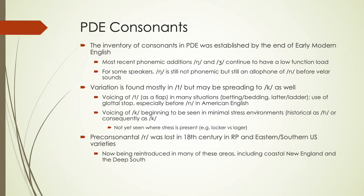The pre-consonantal R was lost in the 18th century in Received Pronunciation — the Queen's English — as well as in Eastern and Southern US varieties, such as the Boston, New York, and New Orleans dialects. Many areas are now reintroducing this, and it goes back and forth based on levels of prestige — a facet of sociolinguistics about why people pronounce things in certain ways. There's some fluctuation in these patterns that we started seeing in the early modern period.